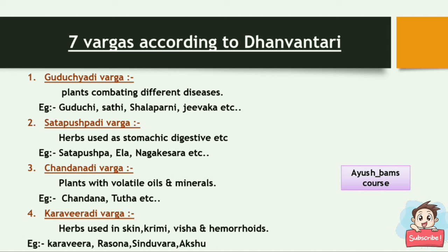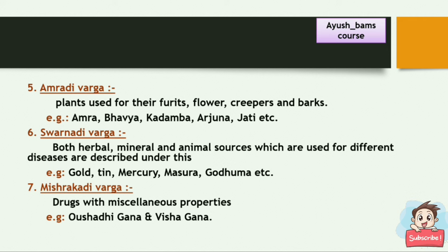Karaviradi Varga: The herbs in this Varga are used for skin, creamy, visha, and hemorrhoids — for example, Karavira, Rasona, Sindhura, Ikshu, etc. Amradi Varga: Plants are used for their fruits, flowers, creepers, and barks — for example, Amra, Bhavya, Kadamba, Arjuna, Jati, etc.